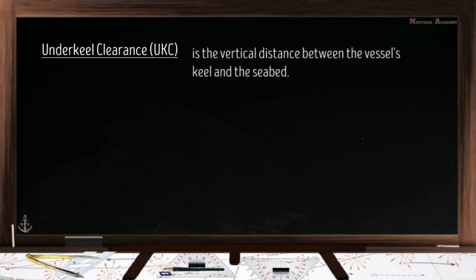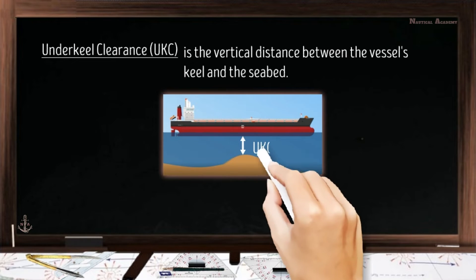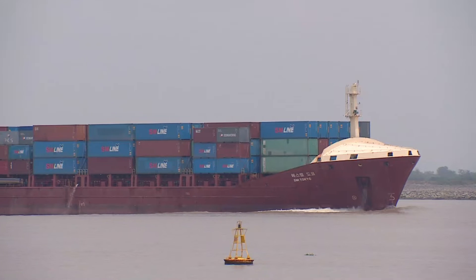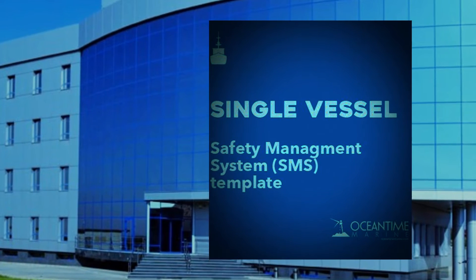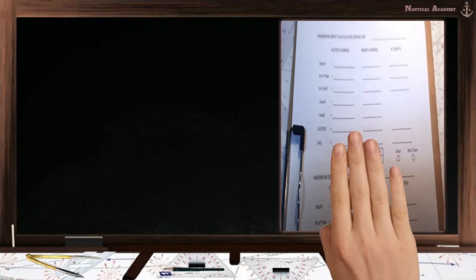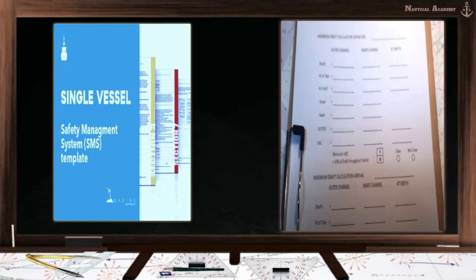Under keel clearance, or what we call UKC, is the vertical distance between the vessel's keel and the seabed. In calculating the ship's UKC, always follow the company policies and guidelines. This is the form I used in my previous company to determine the ship's UKC, and I will use this procedure in today's video. This procedure may differ if you are in a different company — just check the company SMS or Safety Management System manual for the procedure and minimum UKC requirements.